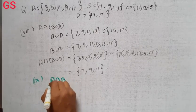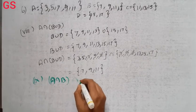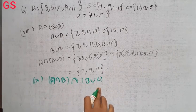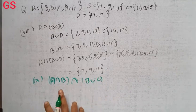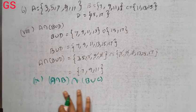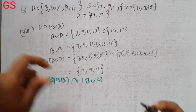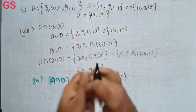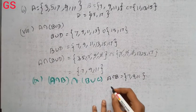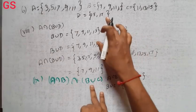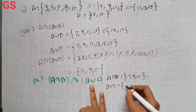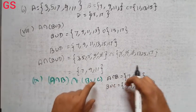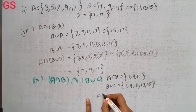A intersection B intersection B union C. First A intersection B and B union C. A intersection B is 7, 9, 11. Next B union C is 7, 9, 11, 13, and 15.